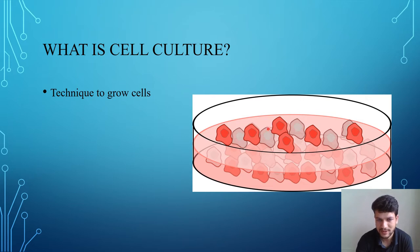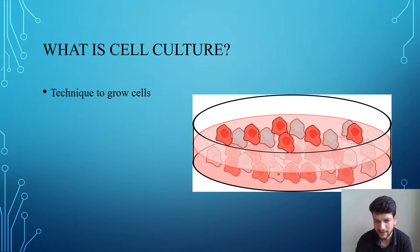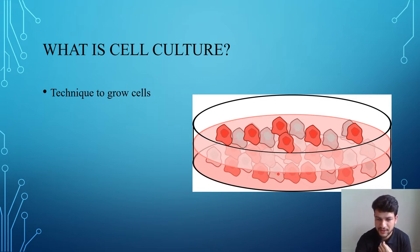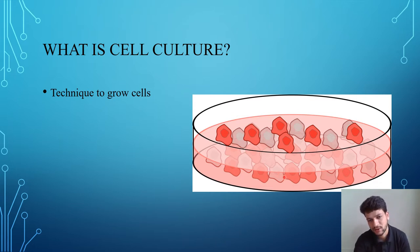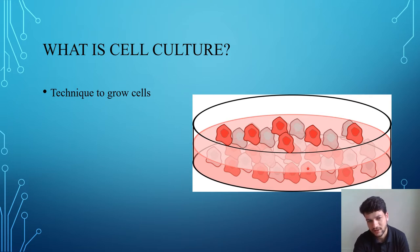In this picture you can see a petri dish in which there is a media. The composition of this media resembles our physiological condition, and this media will give nutrients, oxygen, and other things to these cells.